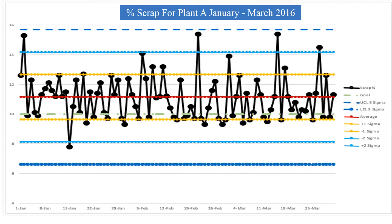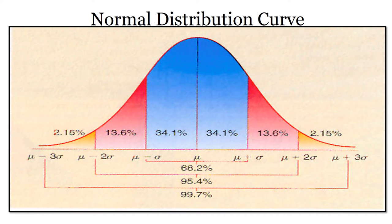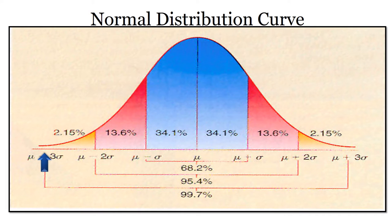In order to better assess the KPI data for Plant A, I changed the chart format from a bar chart to a time series plot and added the upper and lower control limits calculated at plus and minus 1 sigma, 2 sigma, and 3 sigma. The equation for the upper control limit equals the average plus the standard deviation times the number of sigmas, whereas the lower control limit equals the average minus the standard deviation times the number of sigmas. Provided the data is normal, based on the normal distribution curve, 68.2% of the data population should fall within plus or minus 1 sigma, 95.4% within plus or minus 2 sigma, and 99.73% within plus or minus 3 sigma.